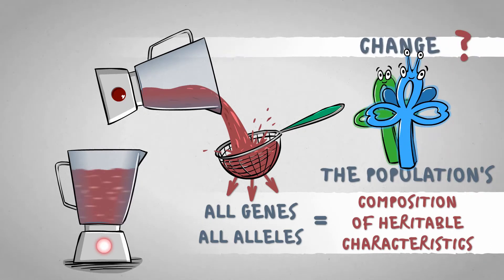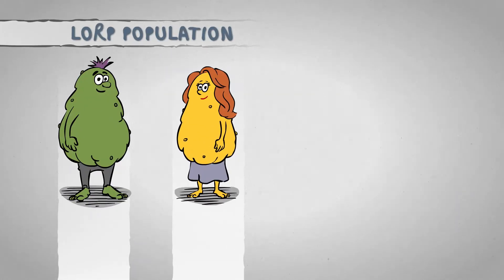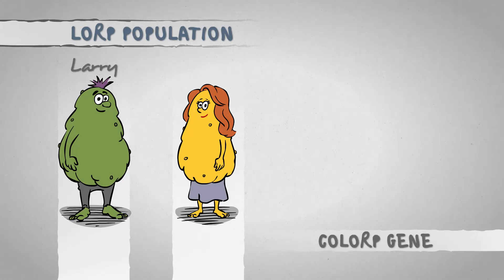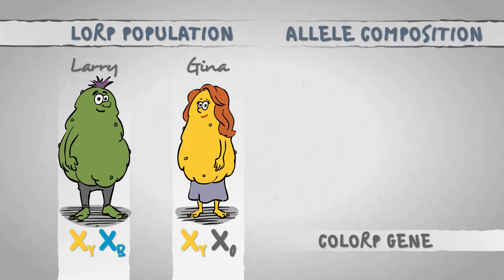Its change can occur in several ways. Let's take a very simple LORP population only consisting of two individuals. Regarding the COLORP gene, Larry has a genotype of XYXB while Gina carries XYX0 alleles. The allele composition of the population, therefore, is 50% XY, 25% XB, and 25% X0.